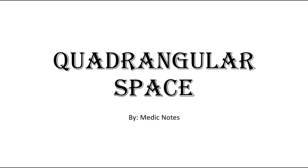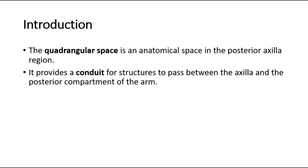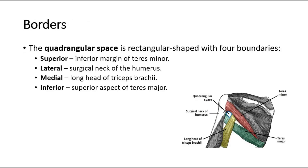Welcome back to another video of Medic Notes. This video is on the anatomy of the quadrangular space. The quadrangular space is an anatomical space in the posterior axilla region. It provides a conduit for structures to pass between the axilla and the posterior compartment of the arm.